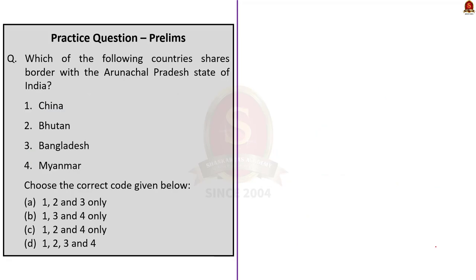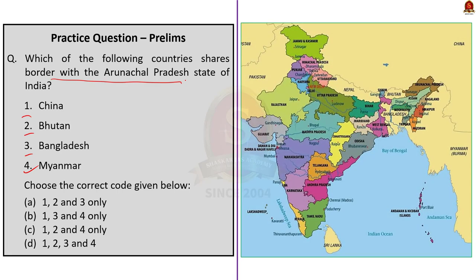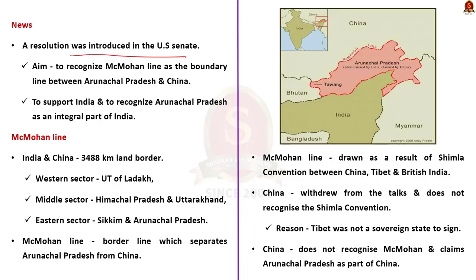Our next question asks which of the given countries share a border with Arunachal Pradesh. From the map, Arunachal Pradesh shares a border with China, Myanmar and Bhutan — it does not share a border with Bangladesh. The correct answer is option C — 1, 2 and 4 only. Arunachal Pradesh also shares a border with Assam and Nagaland states of India. This question was framed because a resolution was introduced in the US Senate seeking to recognize the McMahon Line as the boundary line between Arunachal Pradesh and China, to support India and recognize Arunachal Pradesh as an integral part of India.